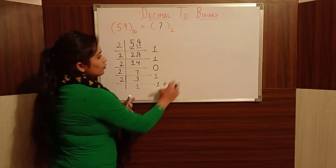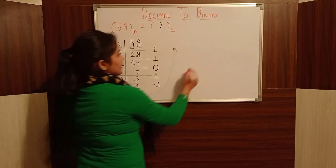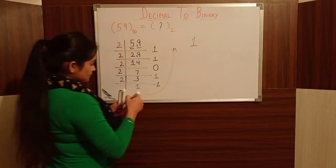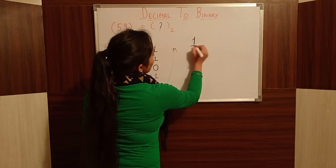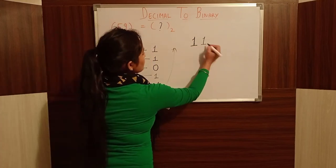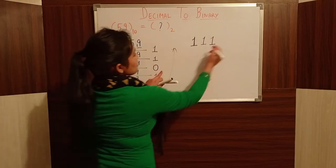We continue with the next divisions, working through each step until we reach the final quotient of 0.